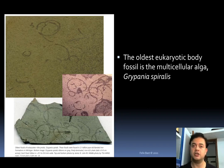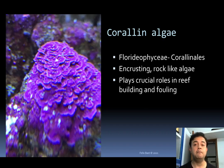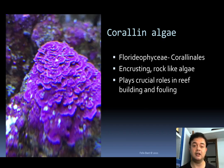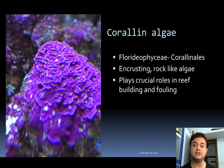Red algae also includes many beautiful coralline algae. Coralline algae belong to Corallinales of Floridiophyceae — these are coral-reef-forming algae that form the bed of the coral reef. This is encrusting algae that looks like rock because it has calcium carbonate deposits. When pH drops and the ocean gets acidified, these algae are at risk of extinction because of ocean acidification, a consequence of climate change. This alga plays crucial roles in reef building.